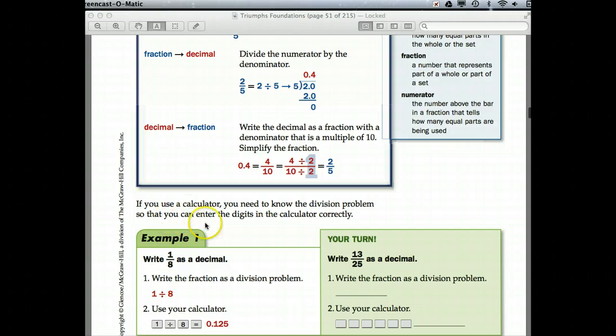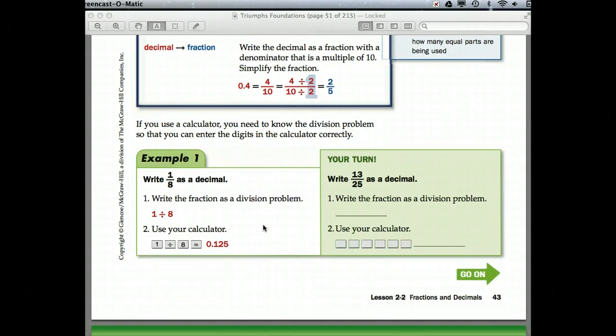If you use a calculator, you need to know the division problem so you can enter the digits correctly. We're asked to write 1 eighth as a decimal. We need to figure out which one's the numerator—1—and the denominator is 8. See this fraction bar? A lot of times we think of this as 1 divided by 8. If you forget which direction to go, just start at the top and work your way down. In your calculator, put in 1, enter the division key, 8 equals. So here's our number. That's 125 thousandths.